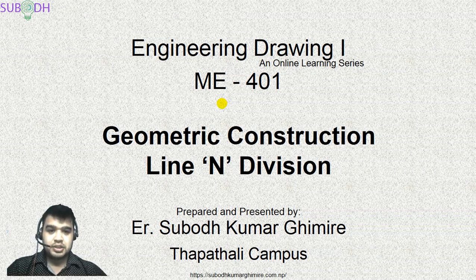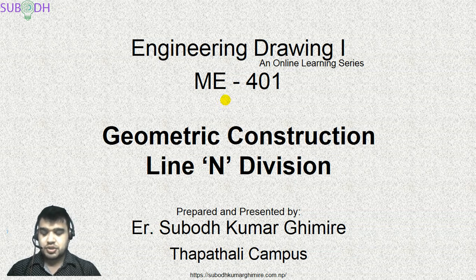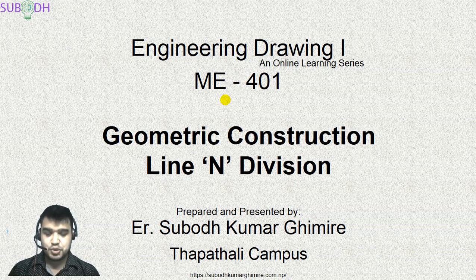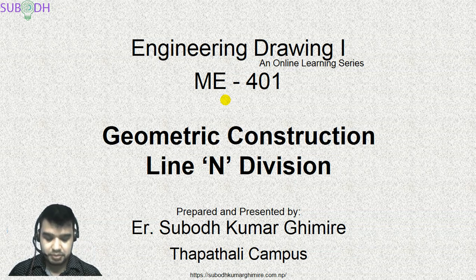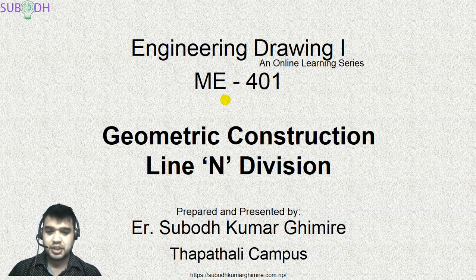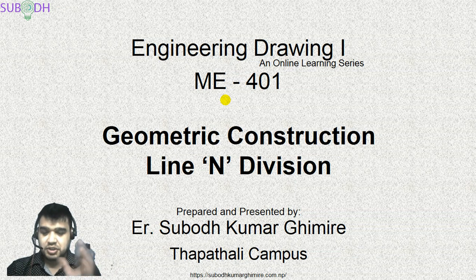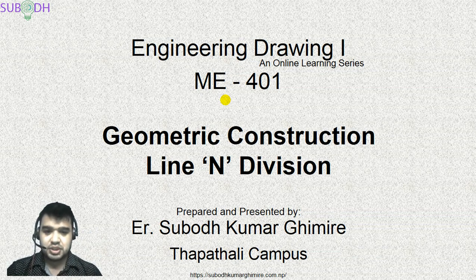Hello everyone, welcome to Engineering Drawing One, an online learning series, subject code ME401. Today's topic is geometric construction — specifically, line and angle division. We will cover bisecting a line or angle, which means dividing into two equal parts, and trisecting, which means dividing into three equal parts. These two methods are really useful and are frequently used in engineering drawing.